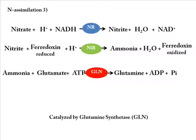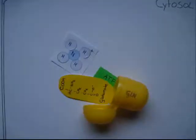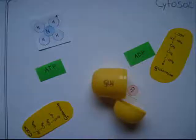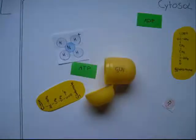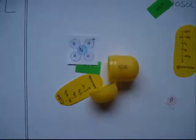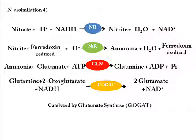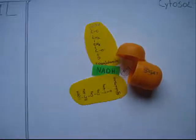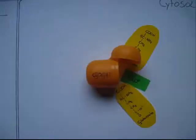In the plastid, ammonia is then together with 2-oxoglutarate turned into glutamine by the glutamine synthase. In the last step, glutamine together with 2-oxoglutarate is turned into 2 molecules of glutamate by the glutamate synthase, which is also named GOGAT.